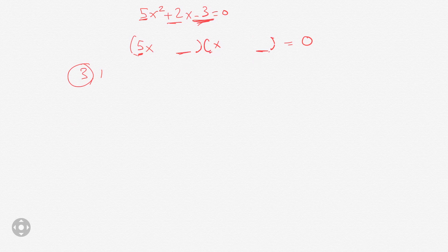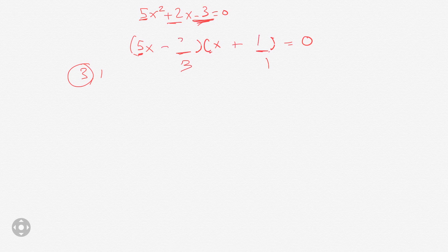So let's try the other way. If we put the 3 here and the 1 here, we multiply 5 by the 1 — that's 5 — and the 3 by x — that's 3x — so that would give us a difference of 2, and we want a difference of positive 2. So 5 times 1 is 5, and 3 times 1 is 3. We want the 5 to be positive so the sum is positive 2, so we would want a plus 1 there and a minus 3 here.